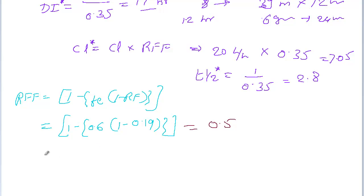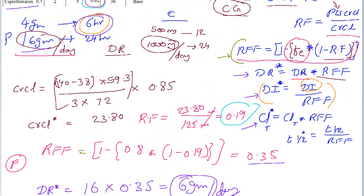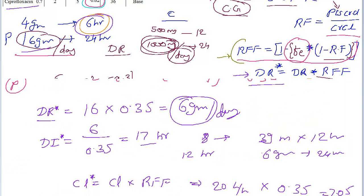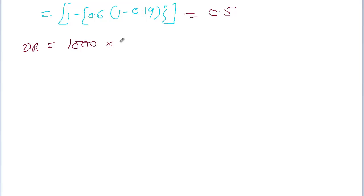Now that we have the renal fudge factor, the next step is dose rate. The actual dose rate for a normal patient is 1,000 milligrams per day. So it's 1,000 milligrams times the renal fudge factor, 0.5. It's pretty easy. The calculation gives 500 mg.